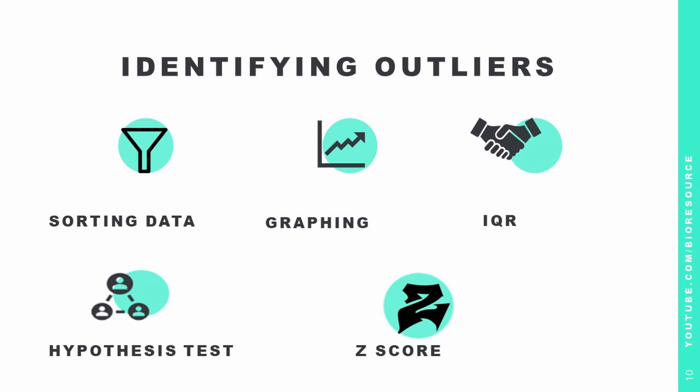There are different ways to identify outliers. One easy method is to sort the data, which allows you to see any unusual data points. Another option is to graph the data using a scatter plot or histogram — graphical representation makes it easy to spot data that differs from the rest of the dataset.